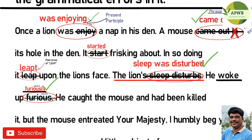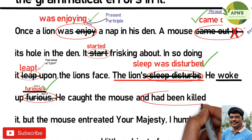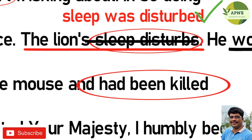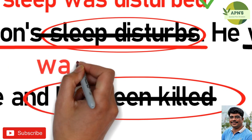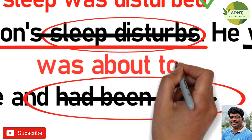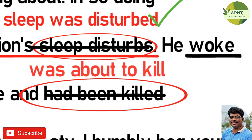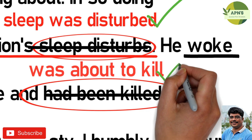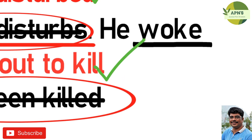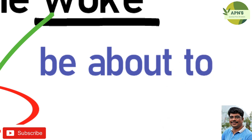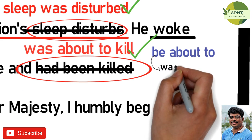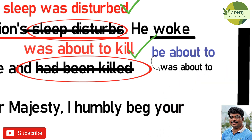'Had been killed' is changed to 'was about to kill'. The meaning of 'had been killed' implies he was already dead, which does not fit the context. 'Was about to kill' correctly expresses that the lion intended to kill the mouse. The phrase 'be about to do something' is used here, with 'be' replaced by 'was'.